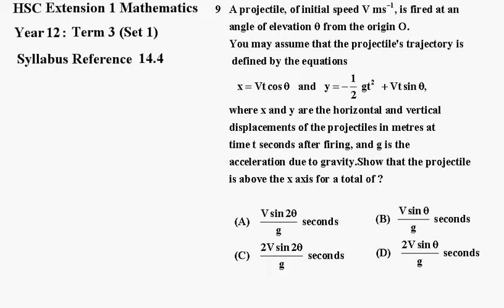Alright, now what we have to do, we'll look at the y equation. So I'll write that down. So we've got y equals minus a half gt squared plus Vt sin θ. But of course it goes off from the origin. What we'll do, we'll let y equal 0 and that will give us the time when it starts and when it finishes.